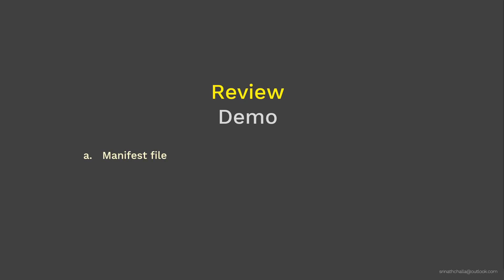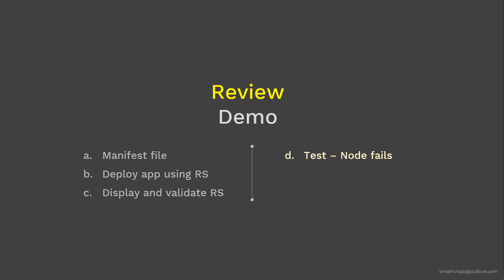Now it's time to move to the review demo section. In the next few slides, we will review the demo we are about to perform on a live Kubernetes cluster in advance. First, we'll see what goes inside a ReplicaSet manifest file. Then we'll deploy the application using ReplicaSet. After that, we'll validate the objects created, test scenarios including pod rescheduling when a node fails, scale up when load increases, scale down when load returns to normal, and finally clean up.